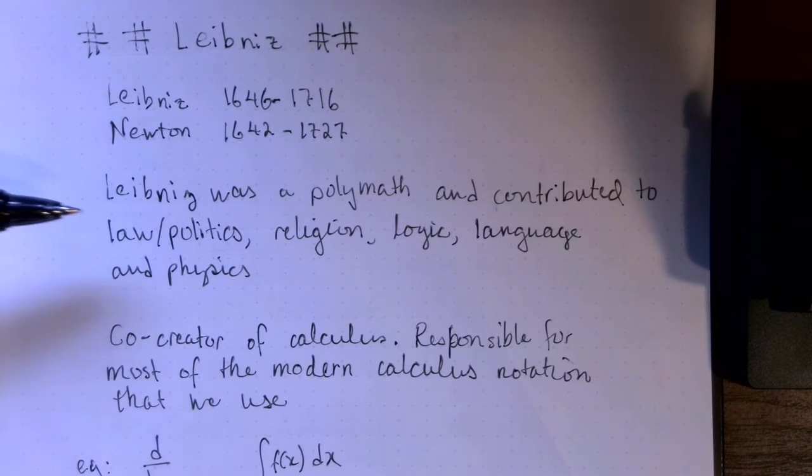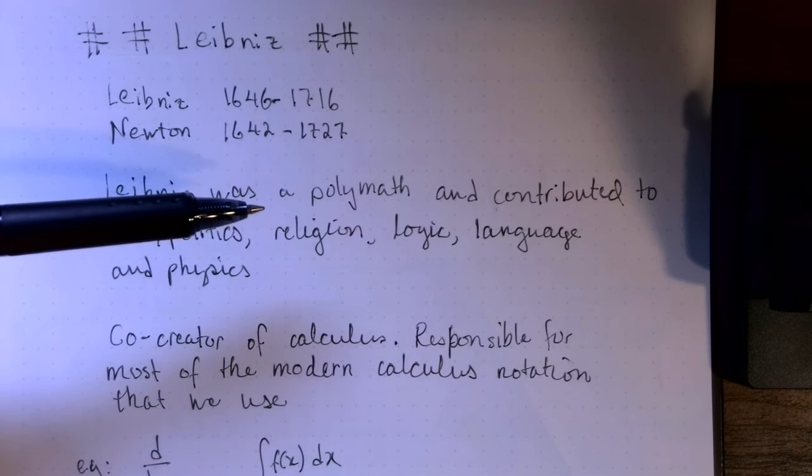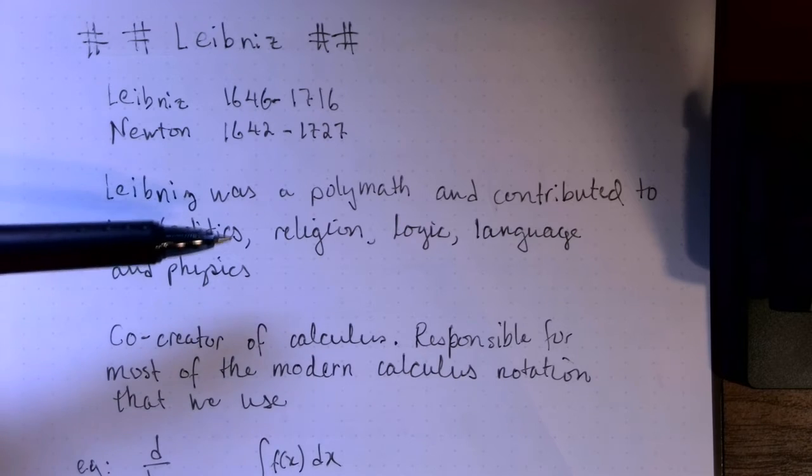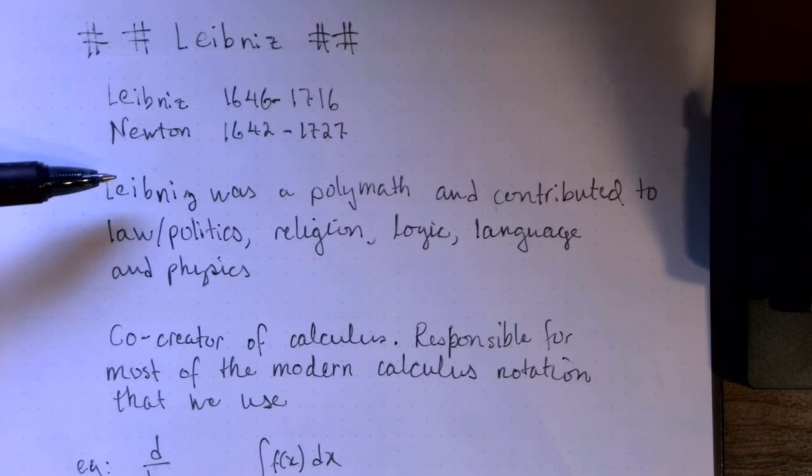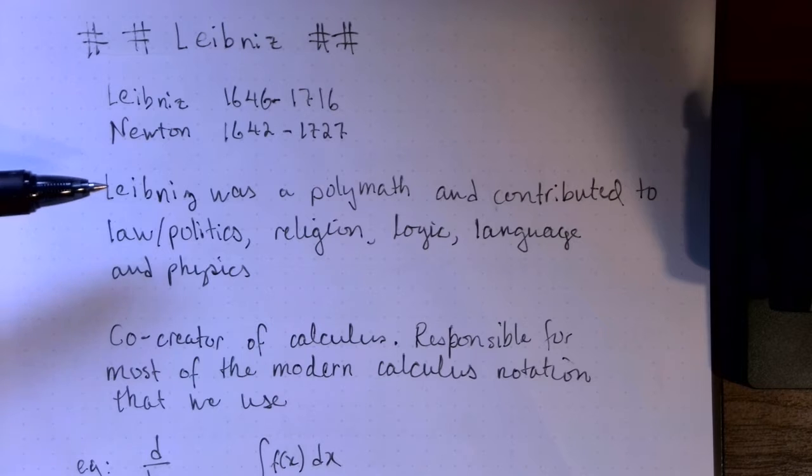Leibniz was what is known as a polymath. In other words, he was strong in a lot of different areas and made contributions to law and politics, religion, logic, language, physics, among other things.